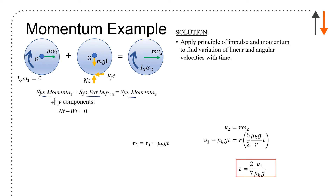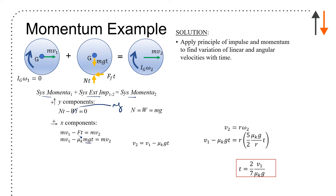In terms of the y components, I have Nt and weight — that should be mg — so weight equals normal force. Then for the x components: mv1 minus Ft equals mv2. The force of friction is really going to be mu sub k times mg, because it's slipping at this point. So I can calculate v2 as a function of v1 as v1 minus mu_k times g times t. You'll see this relationship in a number of different cases in this course and outside of this problem.